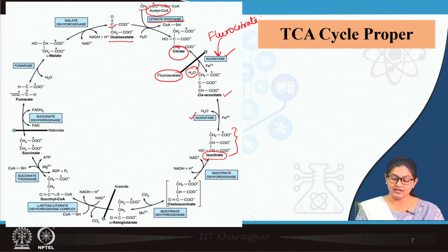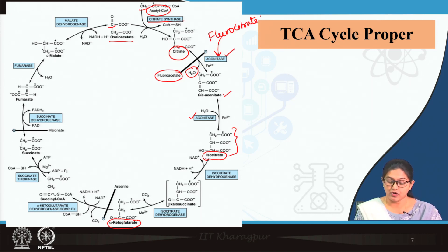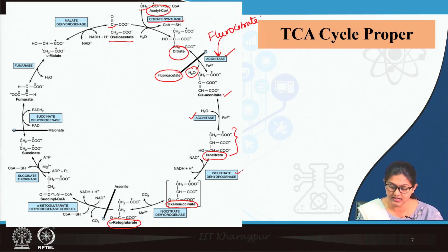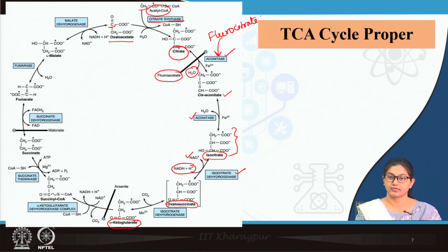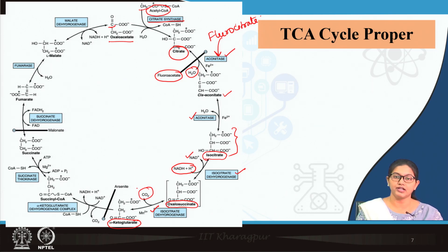Next, isocitrate undergoes oxidative decarboxylation to form alpha-ketoglutarate. This is a 2-step reaction: first, isocitrate forms oxalosuccinate by dehydrogenation with the help of isocitrate dehydrogenase — producing NADH from NAD — then decarboxylation by isocitrate dehydrogenase releases carbon dioxide, finally forming the 5-carbon compound alpha-ketoglutarate.